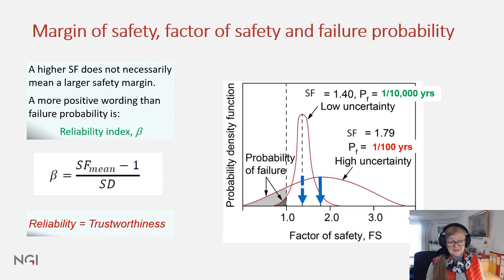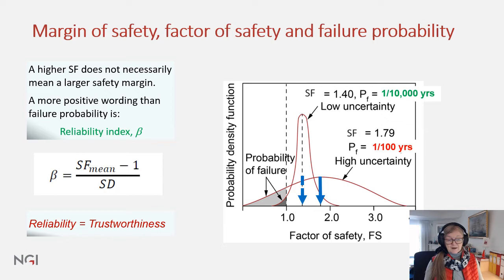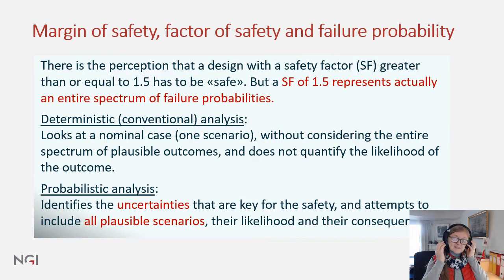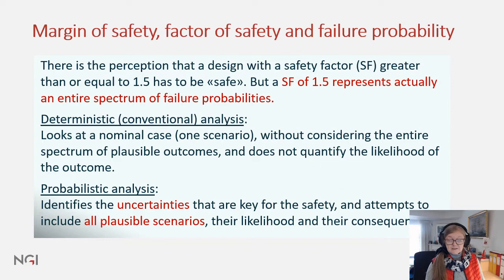A more positive measure than failure probability is the reliability index. That is simply the distance between the mean safety factor and the value of 1, divided by the standard deviations, which represents the uncertainty in the distribution. Reliability is synonymous with trustworthiness. There is a perception that a design with a safety factor greater than or equal to 1.5 has to be safe, but a safety factor of 1.5 actually represents an entire spectrum of failure probabilities.